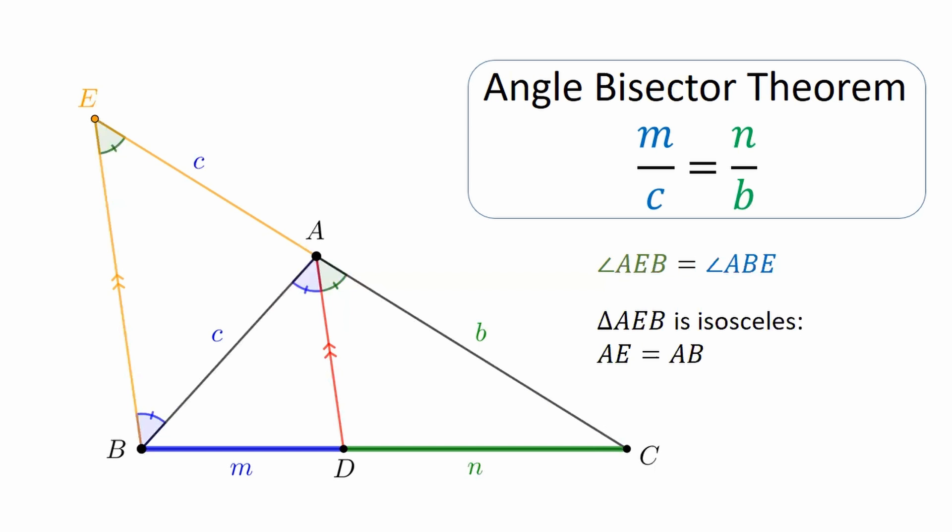Now, focus on the largest triangle CEB. DA is parallel to side BE. Thus, DA, that red angle bisector, divides sides CE and CB into segments with proportional lengths. Therefore, B over C equals N over M. Whether you leave it in this form or rewrite it as the proportion in the theorem box above, we have proved the angle bisector theorem.